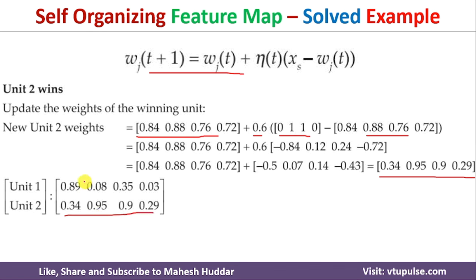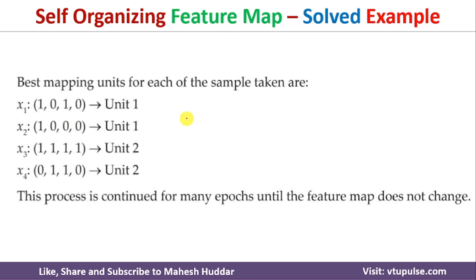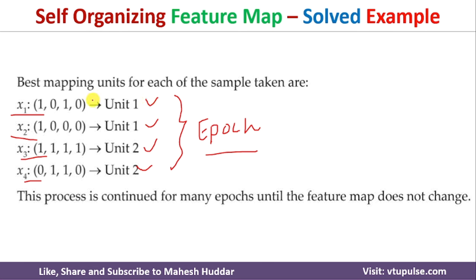After the fourth iteration, all inputs have been consumed. X1 and X2 were assigned to unit 1, and X3 and X4 were assigned to unit 2. This completes one epoch. We need to repeat such epochs until there is no movement of training examples from one unit to another — that is, until the assignments converge. That will be the final mapping of the self-organizing feature map.